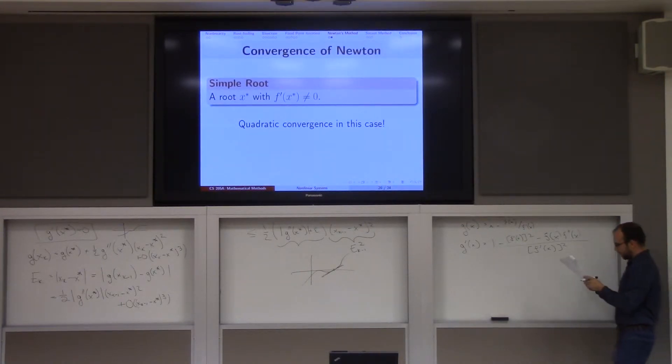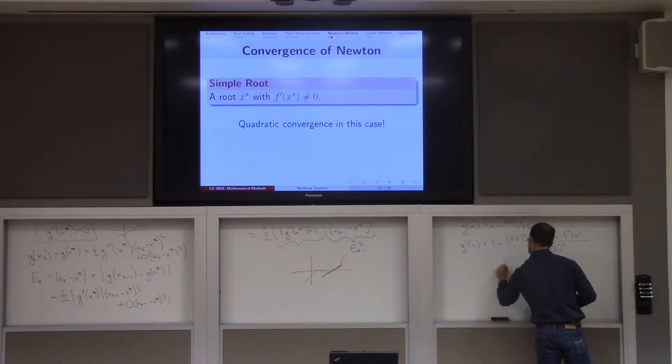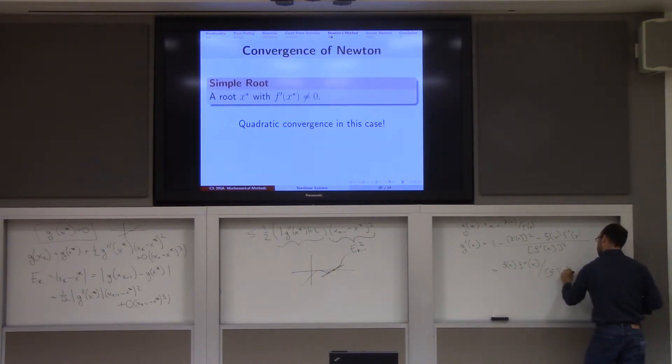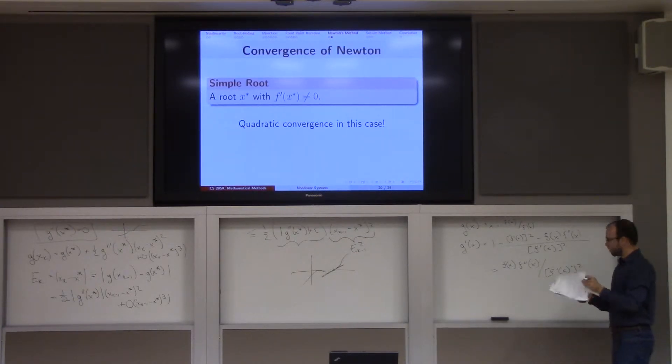But in particular, let's put all of this stuff under the same denominator. And what happens, right? Well, you're going to get an f prime squared minus f prime squared. Yeah? So, in the end, this derivative is equal to f of x, f double prime of x, divided by f prime of x squared. Notice that if f prime is 0, like we're at a non-simple root, we can't do this. Because we're going to be dividing by 0 somewhere. Okay. So, what would be like this formula? Did I do it right? I totally did it right. Yeah.